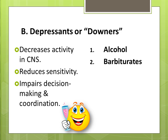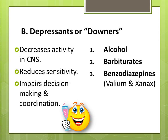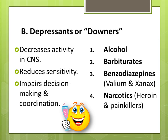Barbiturates are known as major tranquilizers because they have a strong depressant effect. Sleeping pills fall into this category. Benzodiazepines are known as minor tranquilizers because they have a relatively mild depressant effect. Drugs such as Valium, Xanax, Ativan, or Lorazepam are used as anti-anxiety medication and/or as antidepressants. And last in this category is narcotics. Narcotics suppress the sensation of pain; this category includes painkillers such as opium, morphine, and heroin.